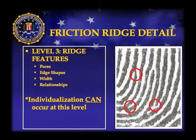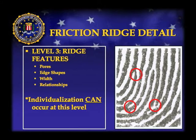We can make an individualization decision at level two. We look at level one, level two, and then go a step further into level three. Level three is more on a microscopic level. We don't make a determination on level three alone, but if we have a latent print of poor quality, level three information can help us make a definite decision in the end.